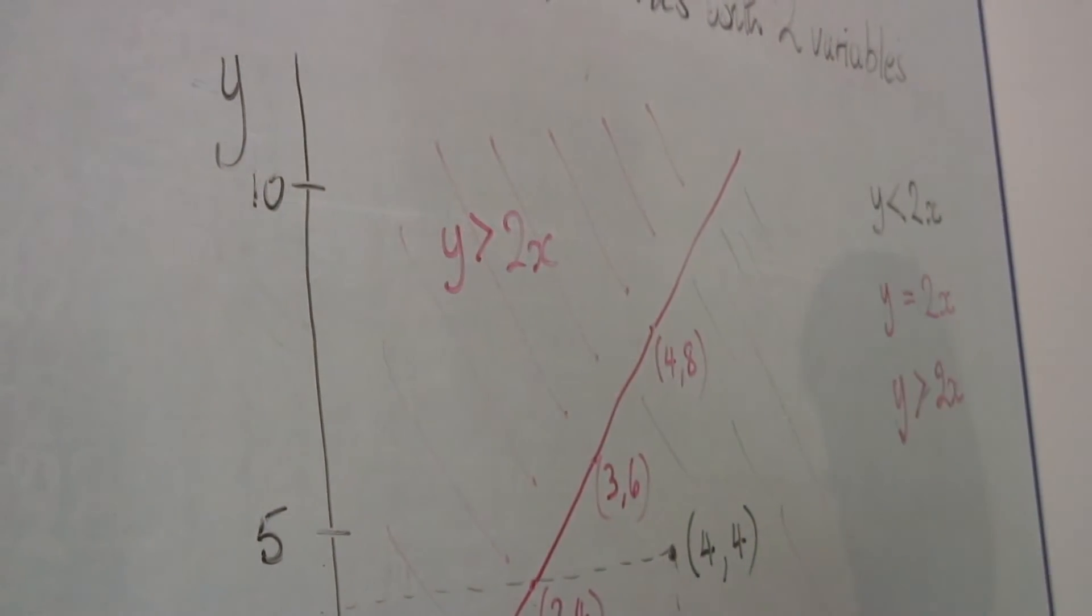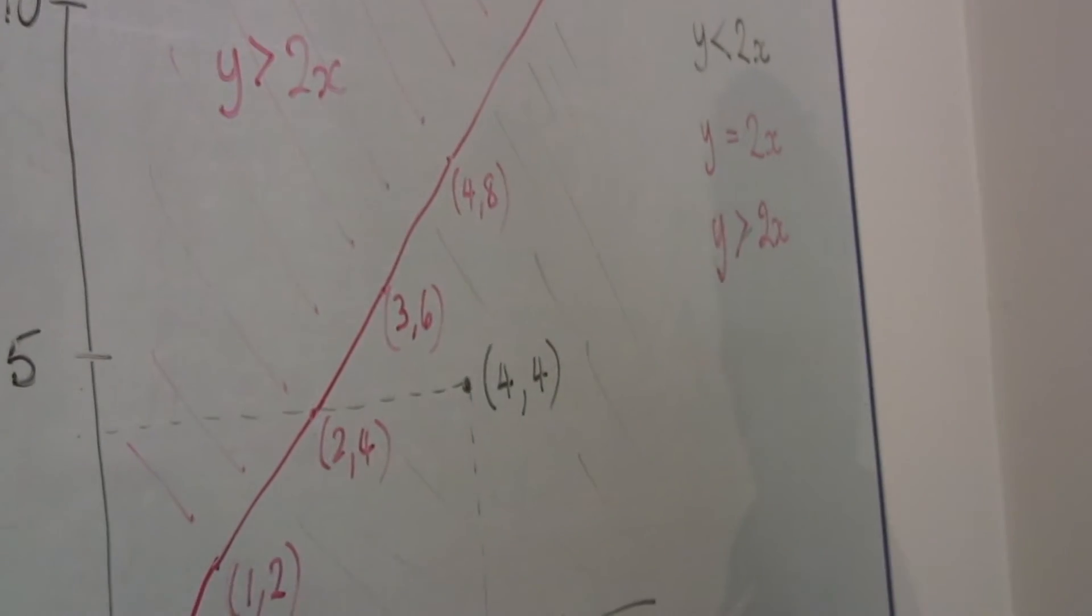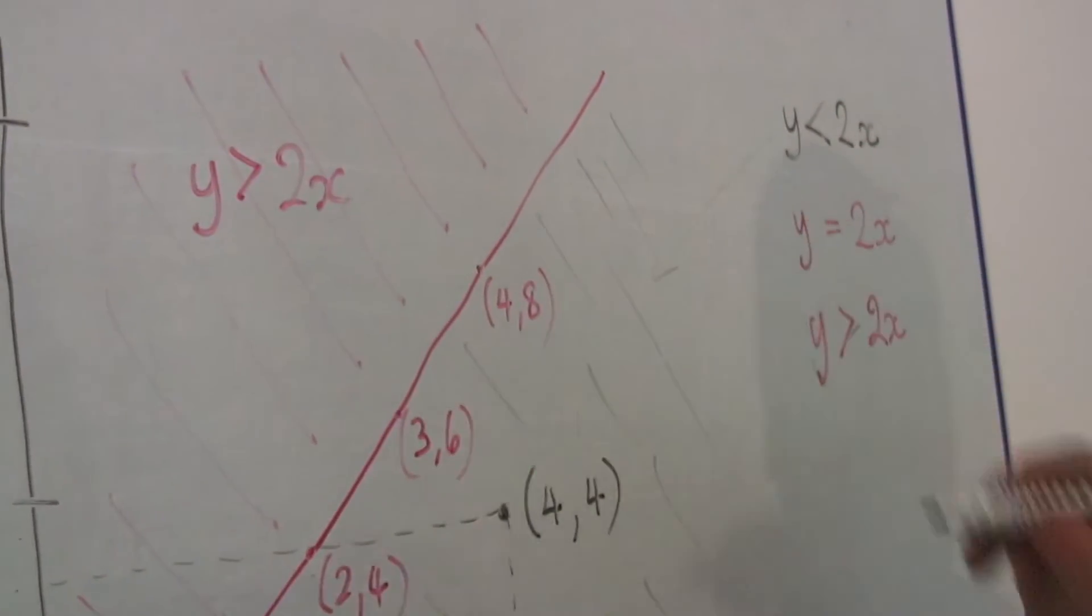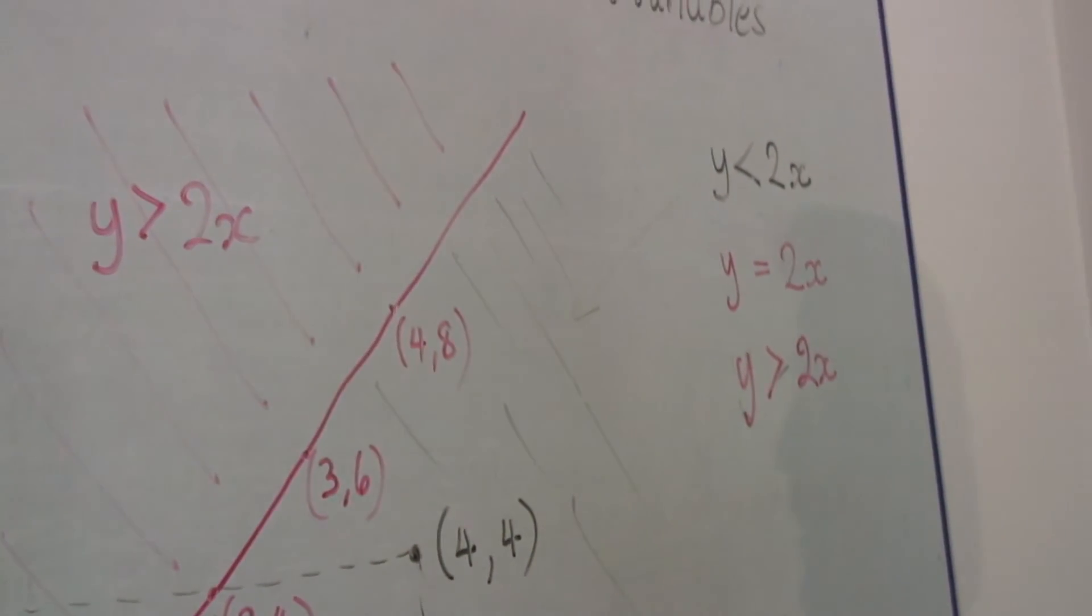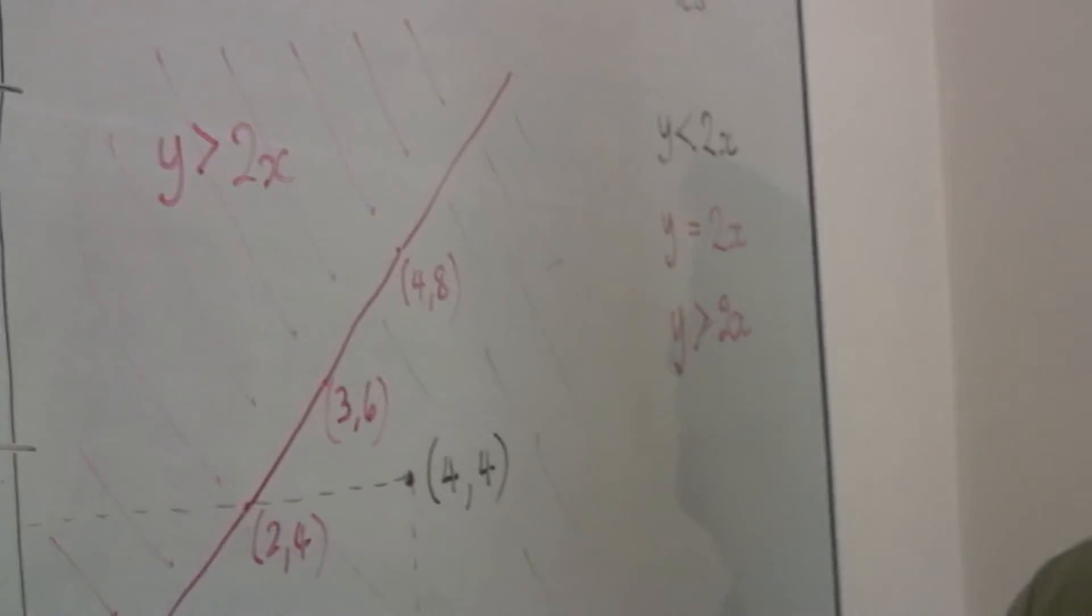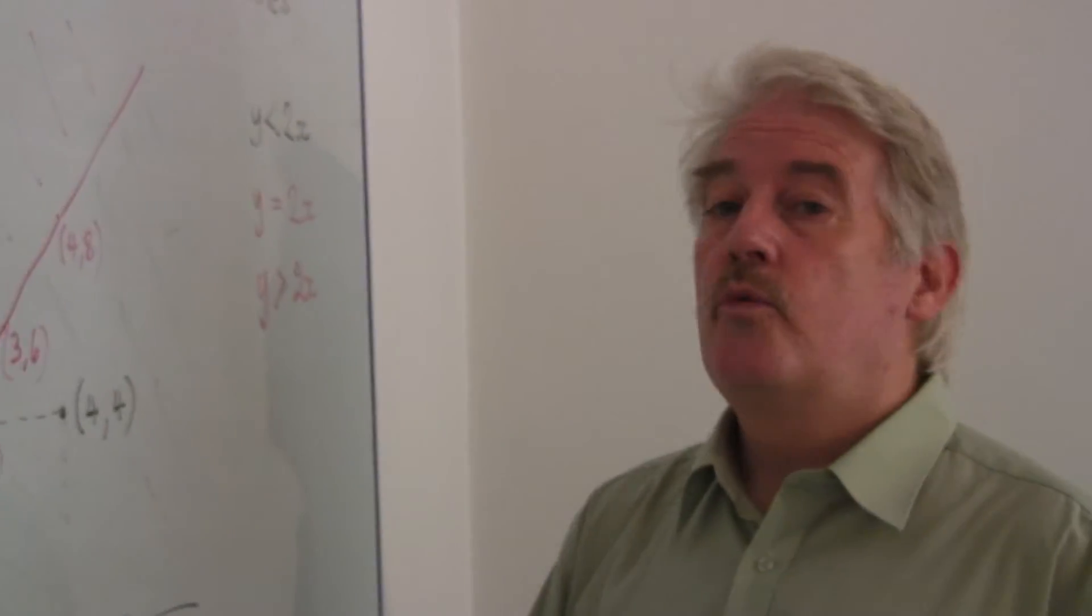This is, at the bottom, y is less than two x. So that simply is how to graph an inequality with two variables.